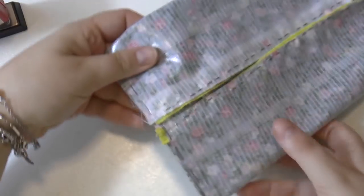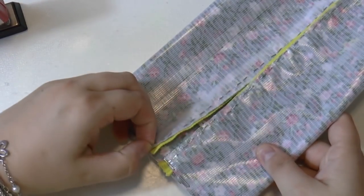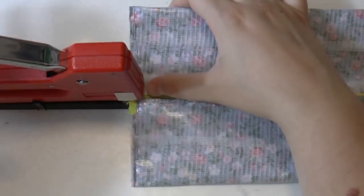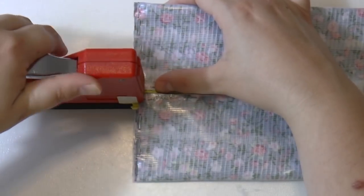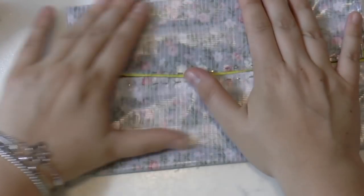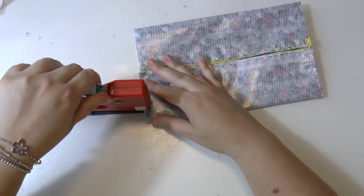You want to make sure you stapled really well the zipper and the two parts of fabric. So put another staple just right in the middle. And now staple the other side.